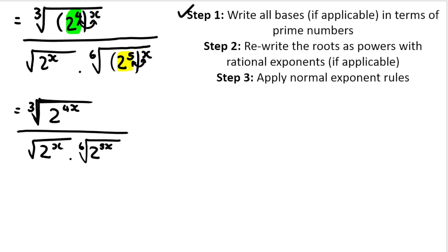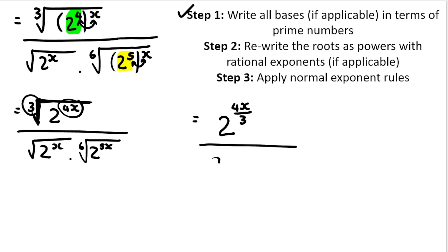Step two: rewrite roots as powers. Remember, these are roots over here — rewrite roots as powers with rational exponents. So in the next step, 2 to the power of — you take the inside divided by the outside, just like we did in the previous video — 4x divided by 3. At the bottom we have 2 to the power of x. Here it's a square root, so an invisible 2: x divided by 2. And over here we have 2 to the power of 5x divided by 6. That's step two done.